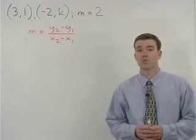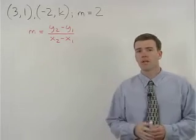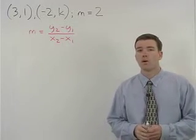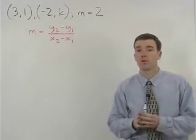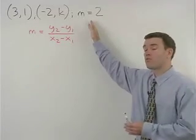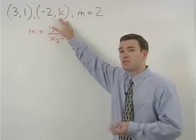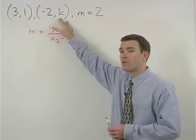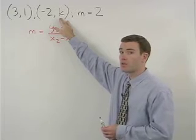The problems in this section will also involve the slope formula. But unlike the previous section where we were given the coordinates of two points that lie on our line and we were asked to find its slope, in this section we'll be given the slope of our line and we'll be asked to find a coordinate that is missing from one of its points. That coordinate will be represented by the variable k.